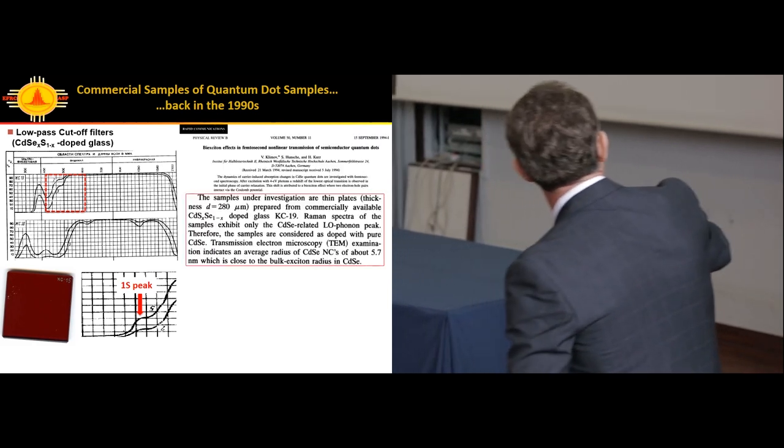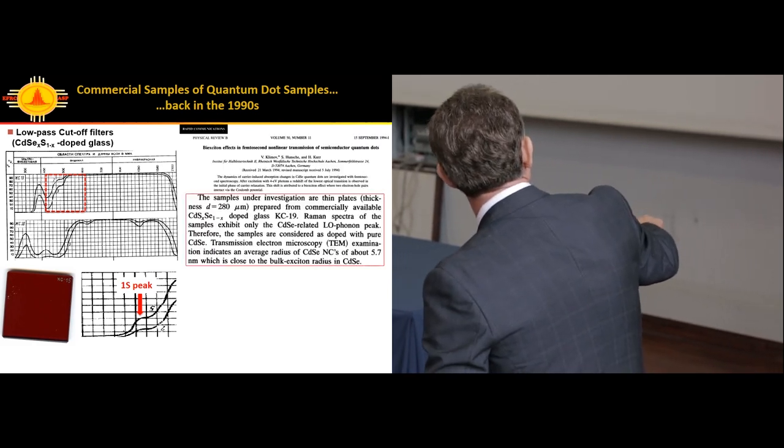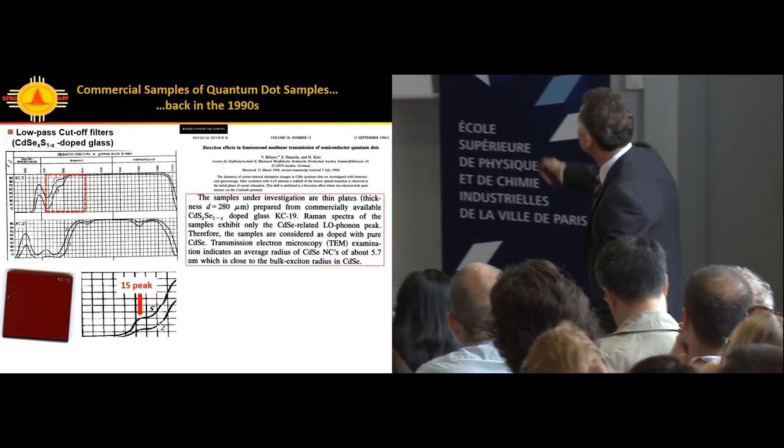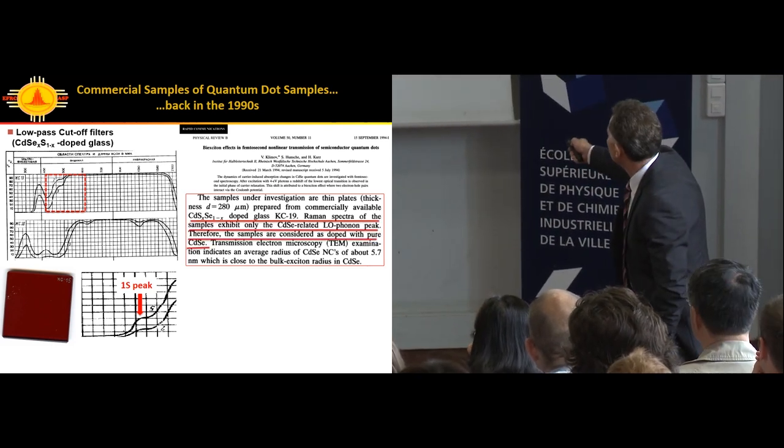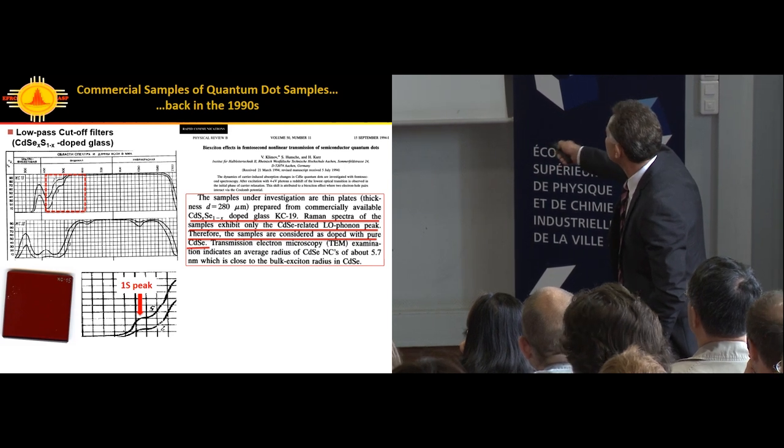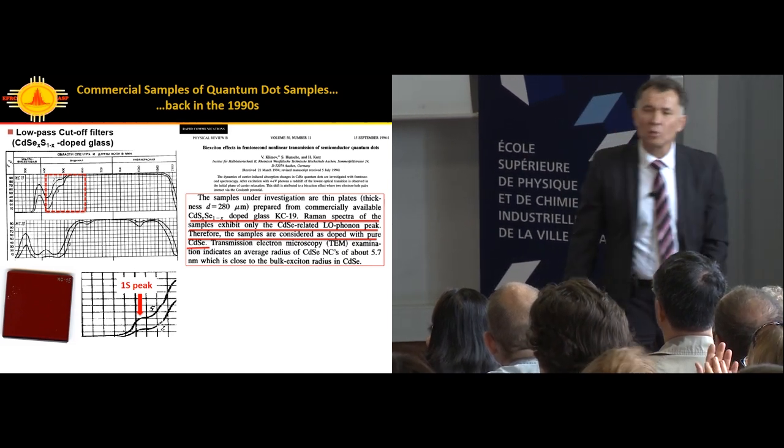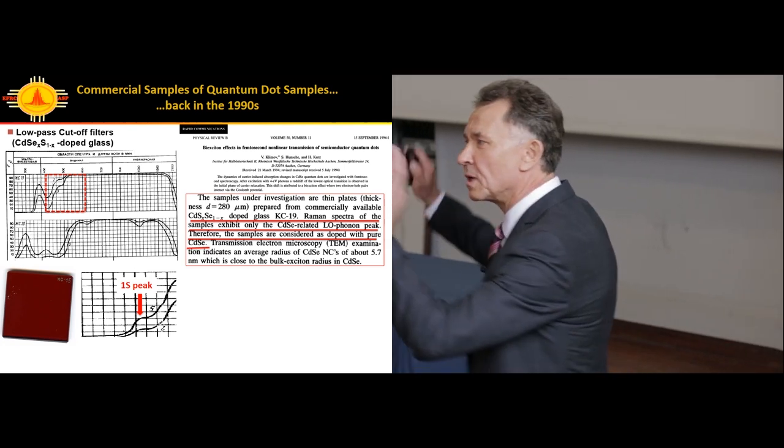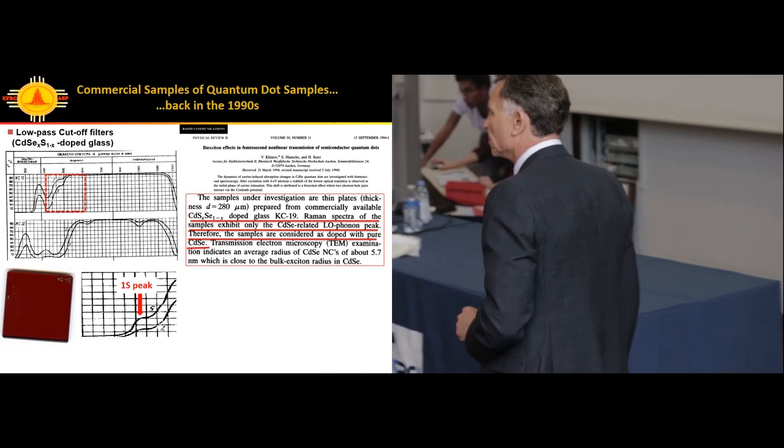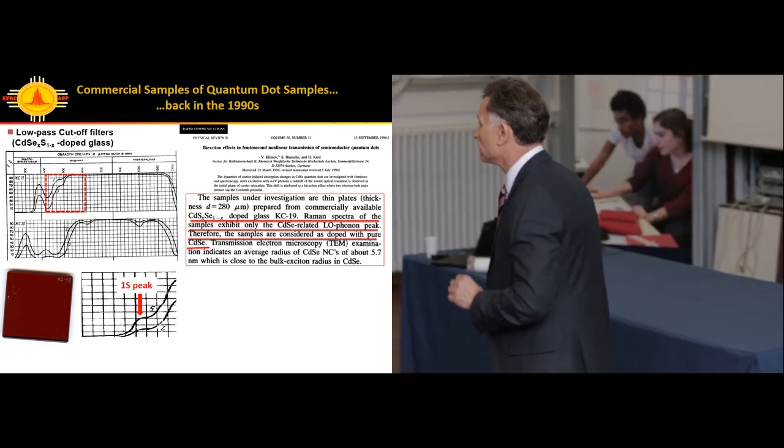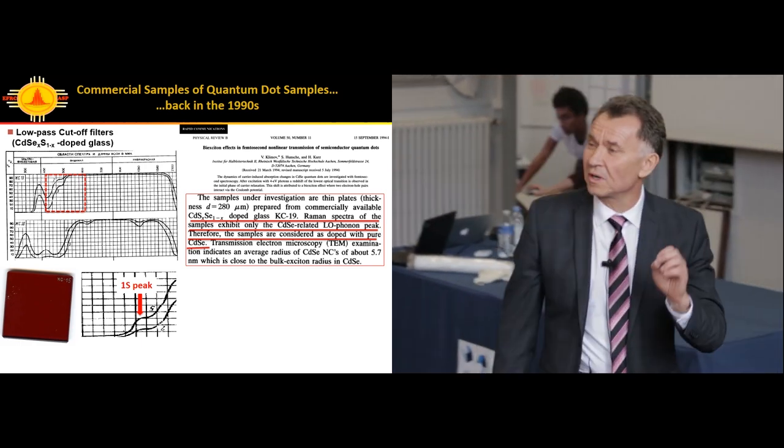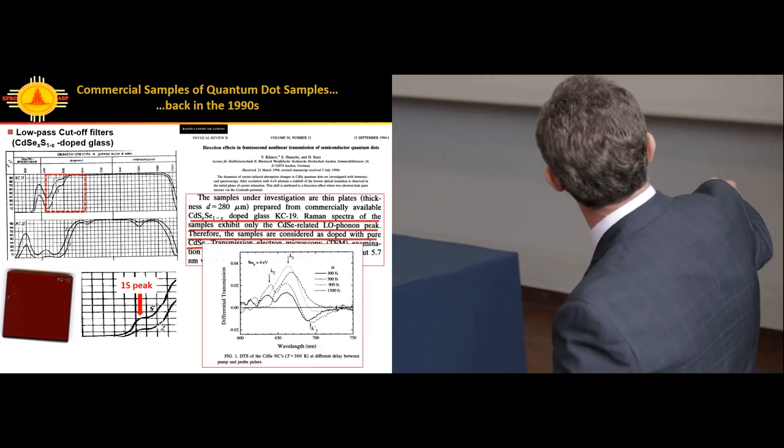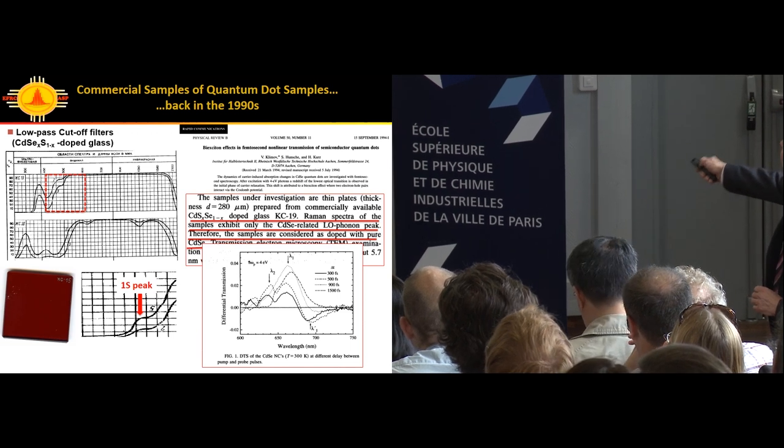With some patience, you test a bunch of samples. This is our favorite filter, KC19, red glass 19. Doing Raman spectroscopy, analyzing phonon replicas, you can see there is almost no cadmium sulfide there, it's just cadmium selenide. Pure cadmium selenide quantum dots. I still have them in my drawer cabinet.